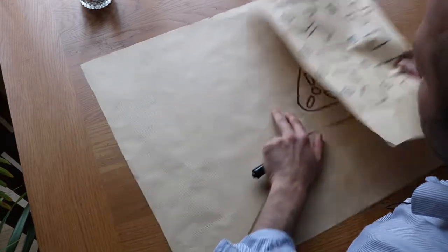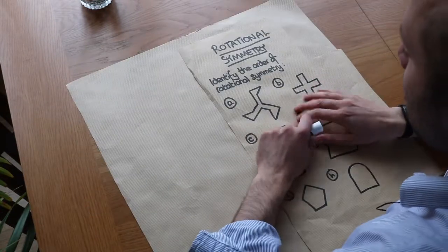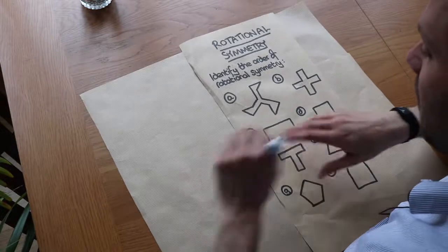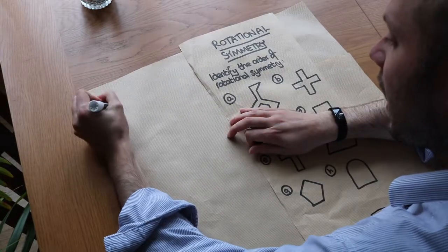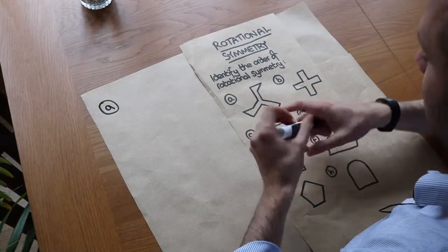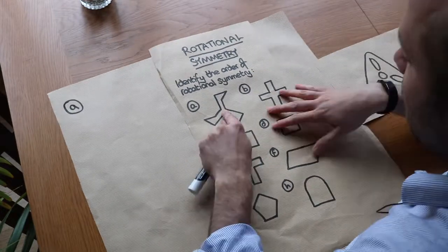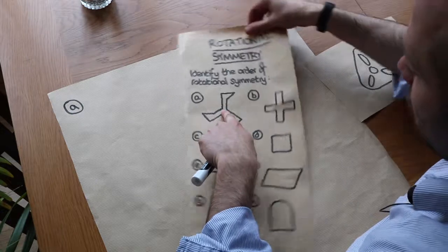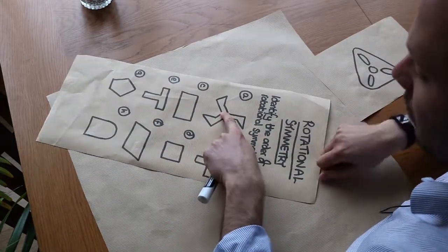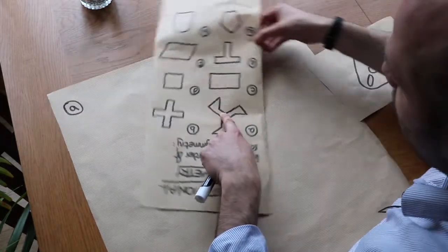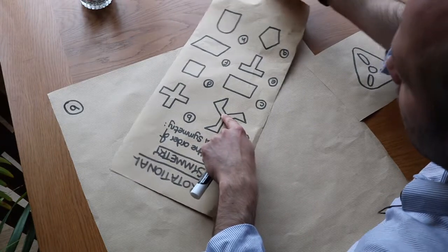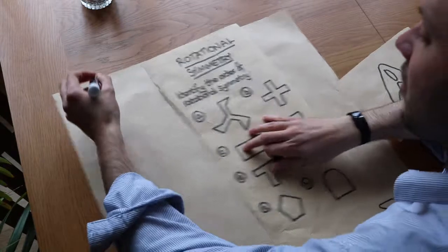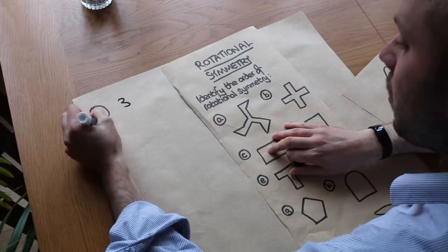Let's answer these questions and identify the order of rotational symmetry of each shape. Looking at shape A, we can just spin the piece of paper to see the rotational symmetry. How many times do we have to rotate it? Well, once and we see the original image, then twice, then three times and we get back to the starting image. So that has rotational symmetry of order three.